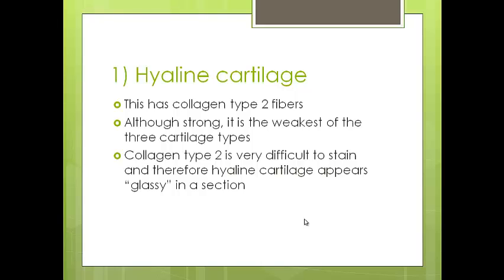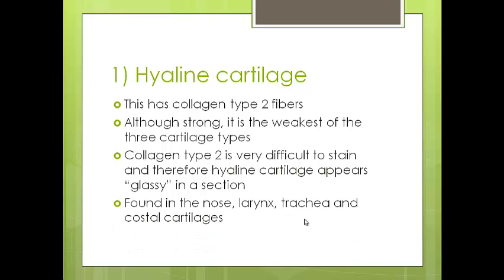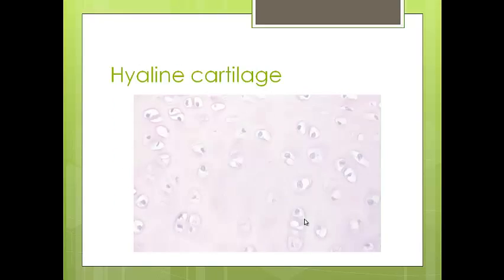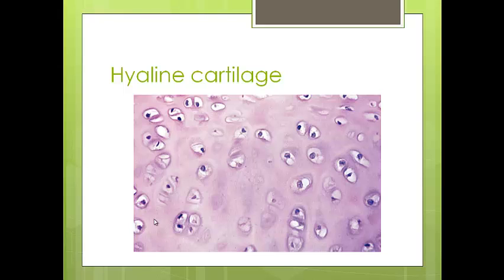Collagen type 2 is generally very difficult to stain histologically — there is no dye that will stain collagen type 2 fibers. So under the microscope, collagen type 2 and hyaline cartilage appears glassy, basically like glass. Hyaline cartilage is found in certain parts of the body such as the nose, the larynx, the trachea, and the costal cartilage — so generally think of it as respiratory cartilage. This is what hyaline cartilage looks like: you've got the mature cells found in their lacunar spaces separated from each other with extracellular matrix in between, but it's clear — you can't distinguish any separate types of fibers, which is referred to as the glassy appearance.